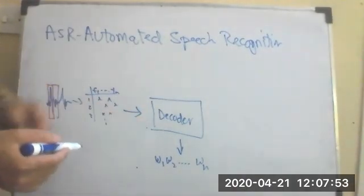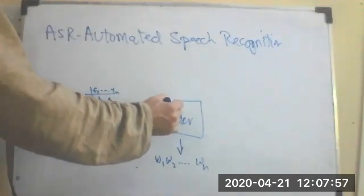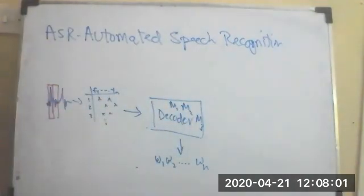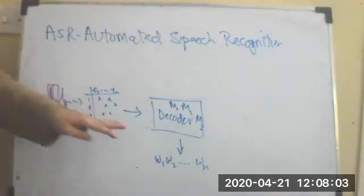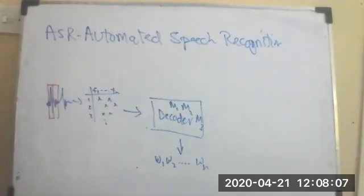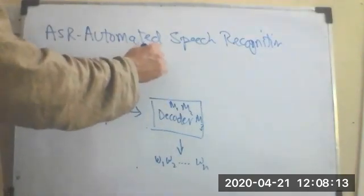So how does the decoder work? This decoder has a number of models—model one, model two, model three, and so forth. This is not the standard; there will be exactly these models, but generally these ASR systems at least work with three models. There is this acoustic model.